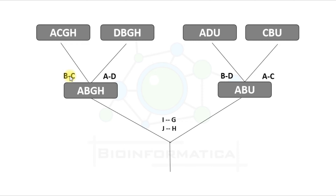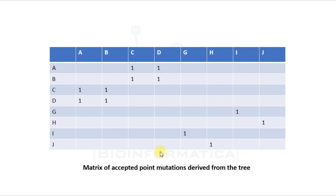These are amino acid exchanges. We can clearly see that A changes to D and A changes to C, but C and D do not directly interchange. If we had compared the observed sequences directly, we would have inferred the change of C and D also. For these, we have treated the changes statistically, distributing them among all observed alternatives. This matrix of accepted point mutations is derived from the tree we have discussed.